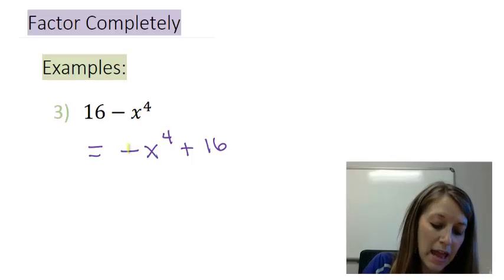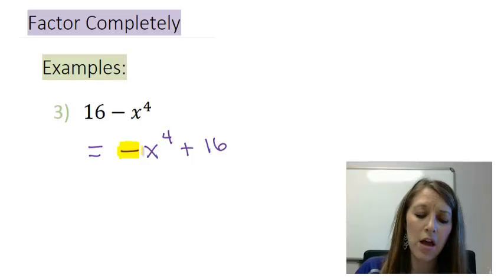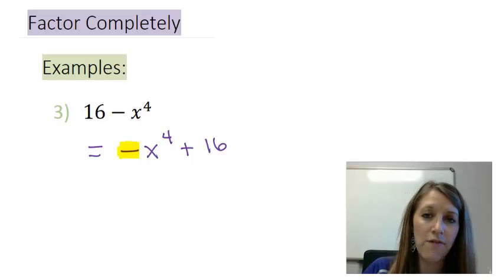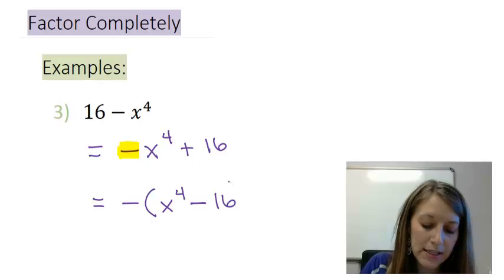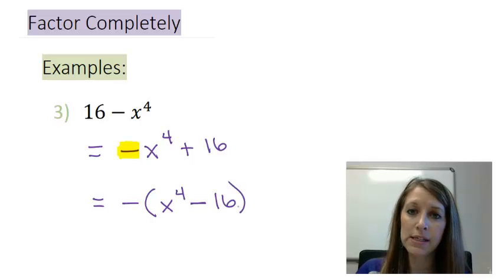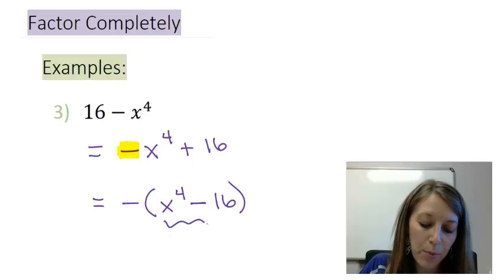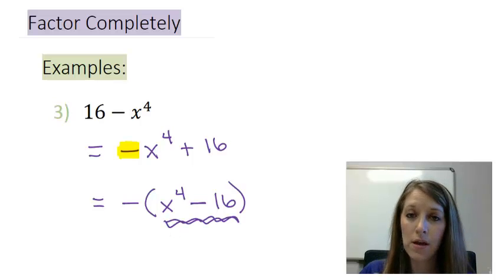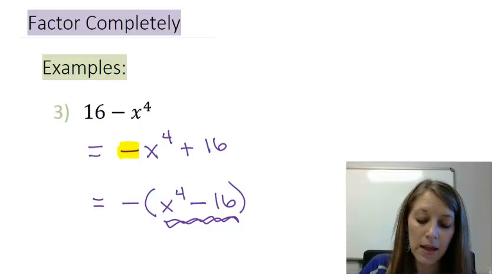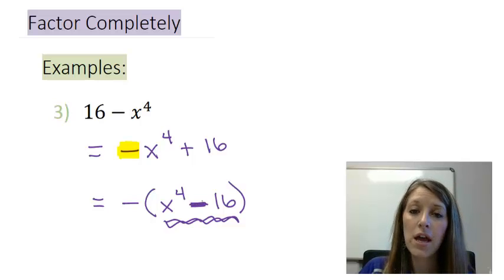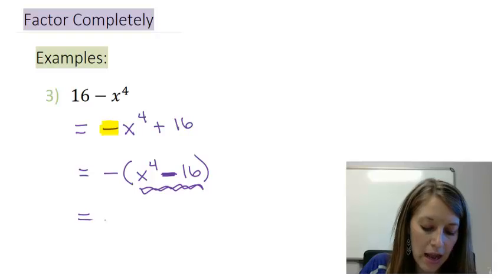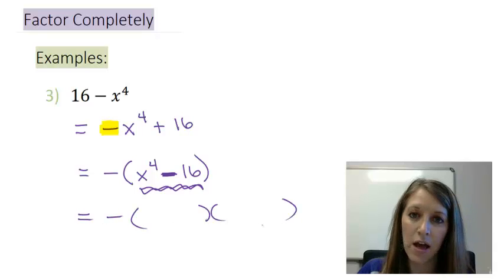Now that gives me a negative in my first term which I don't really like. So instead I'm going to factor out that negative. So that leaves me with positive x to the fourth minus 16. When I take out a negative it switches my sign. Now if I look inside my parentheses I have two terms. So I have to decide whether it's squares or cubes and these are squares and then I double check to make sure that this is a subtraction. A difference of squares. And it is. So I can go ahead and factor this by using a difference of squares.